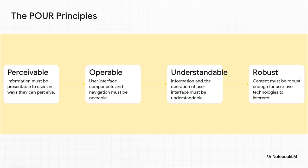Next, O is for Operable. Can everyone actually use it? Think about somebody who can't use a mouse. Can they get around your entire site, fill out a form, click every single button, just using their keyboard? They have to be able to.